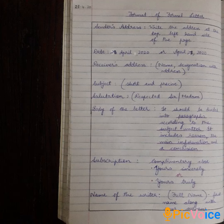Students, let us now understand the format of writing a formal letter. It begins with the sender's address, which is written at the top left-hand side of the page, close to the margin. Next comes the date.